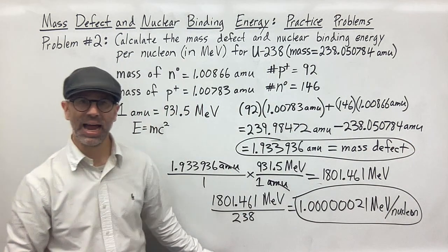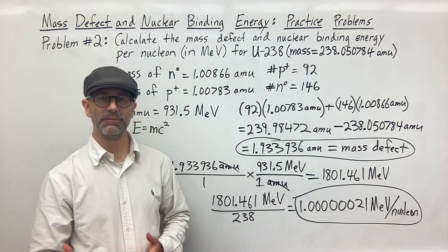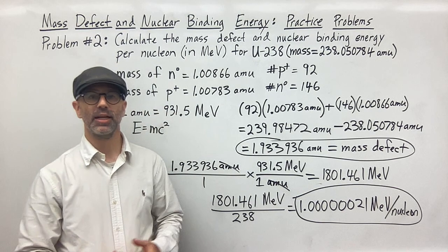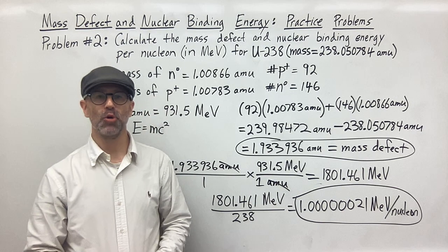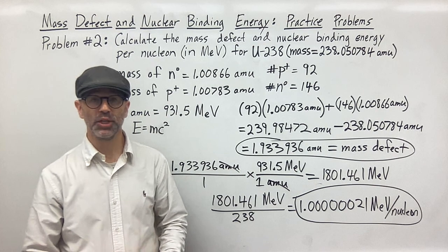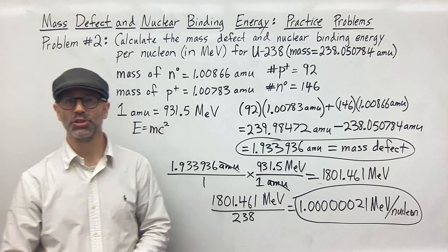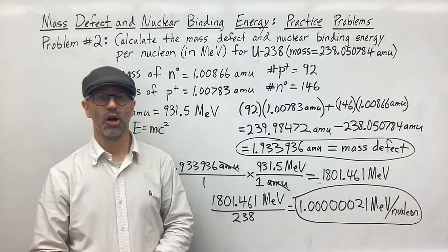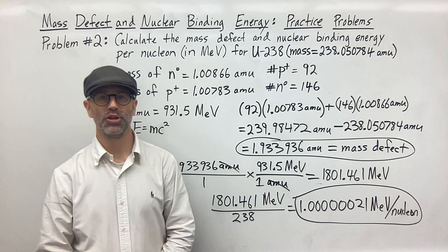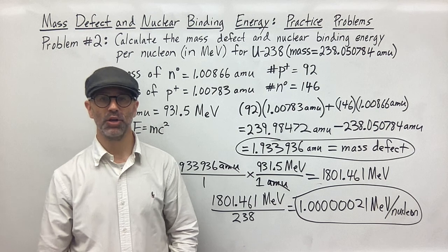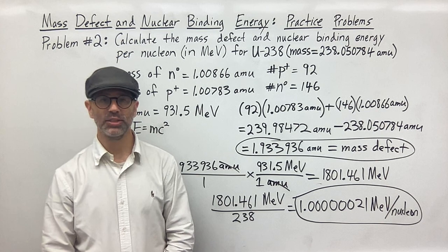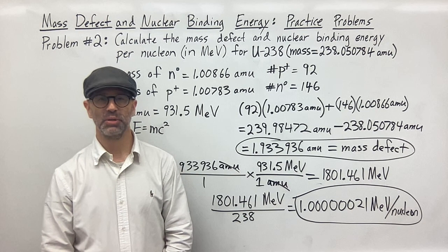And that ladies and gentlemen is how you calculate the mass defect and the nuclear binding energy per nucleon for a given isotope. I hope this is helpful. If you learned from this video, please like the video, share it with your friends, subscribe to my channel, hit that notification bell and click all so you can be notified of all the videos I put out. Put a comment down below, let me know what you think, ask me questions. Thanks for joining me and have a great day.